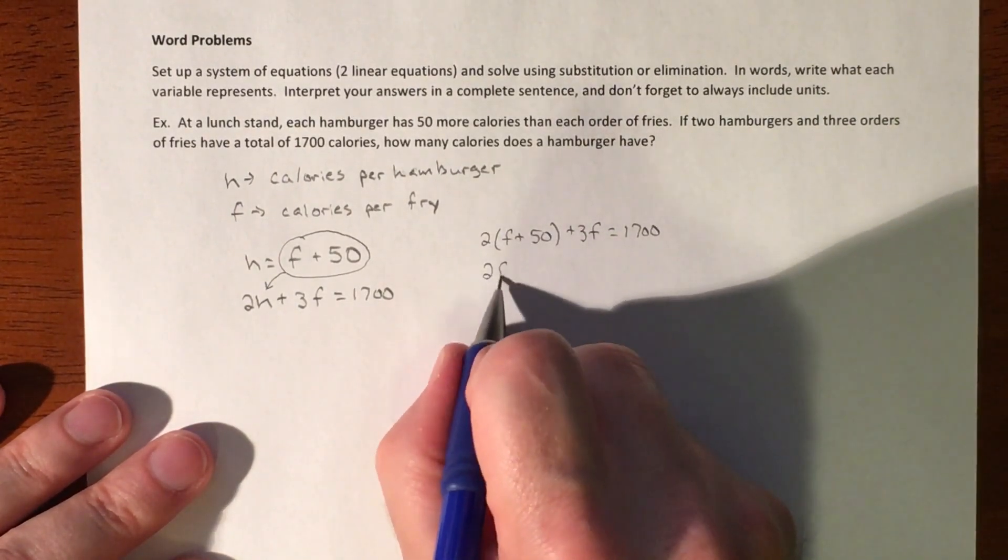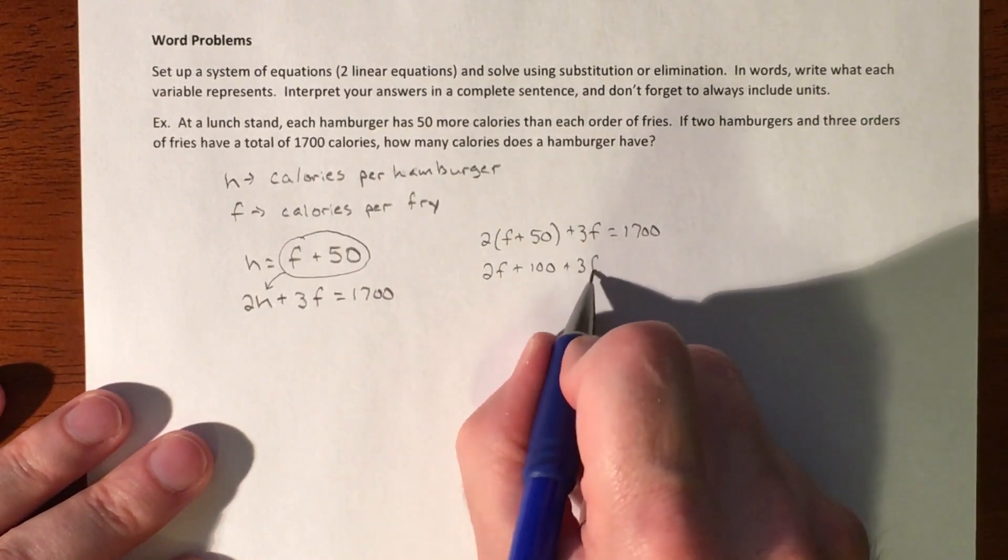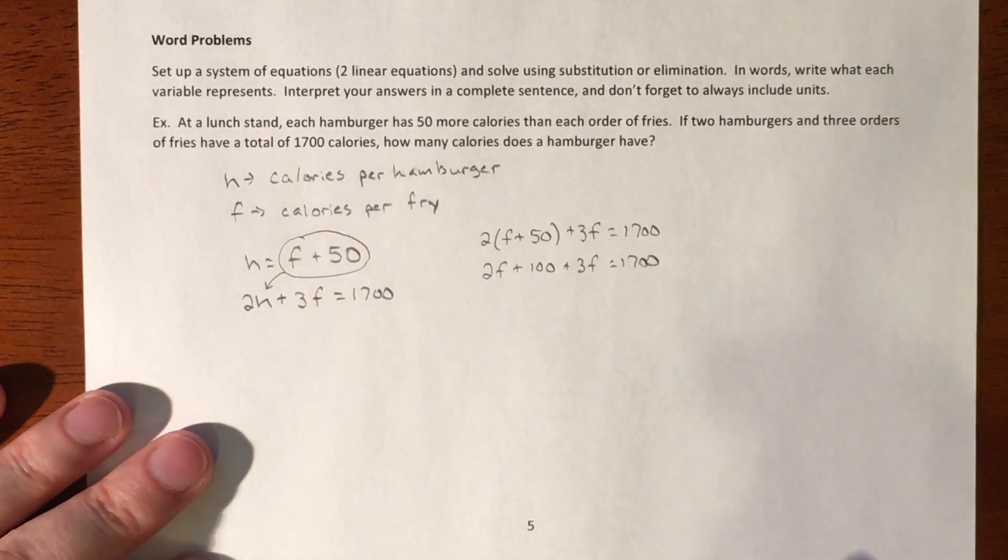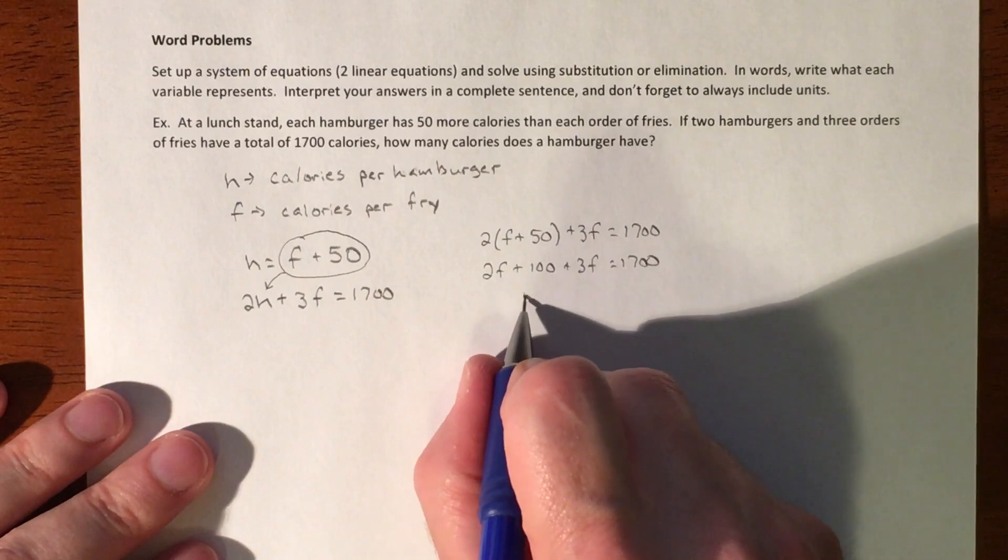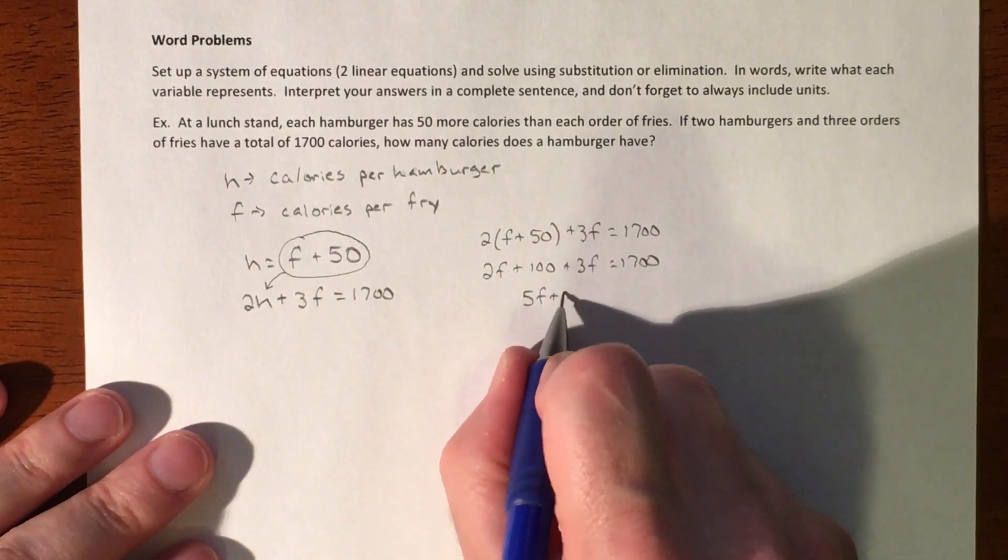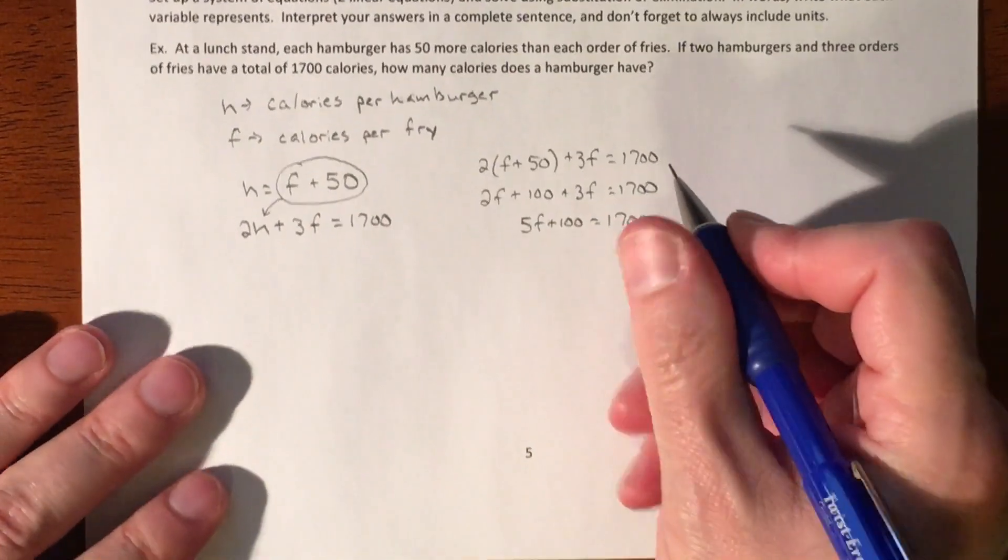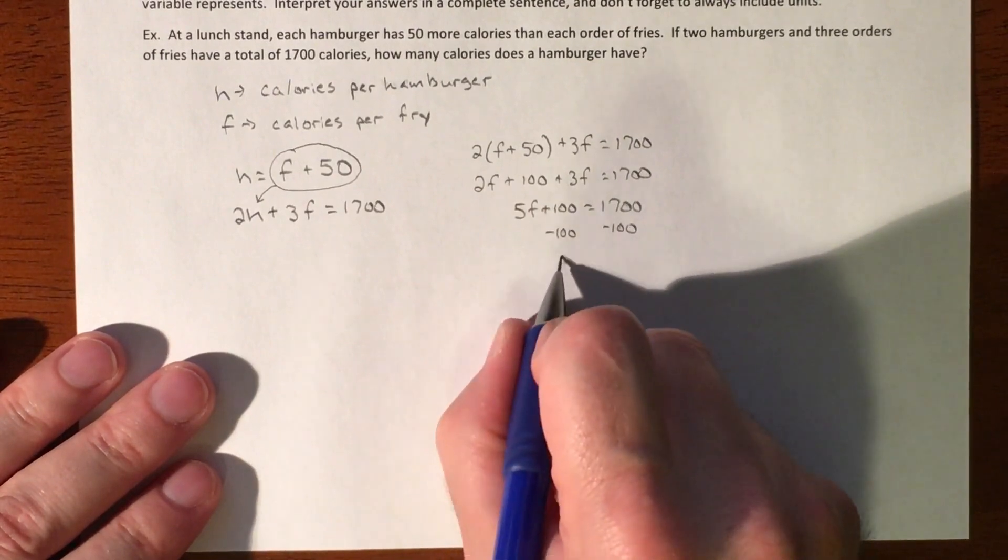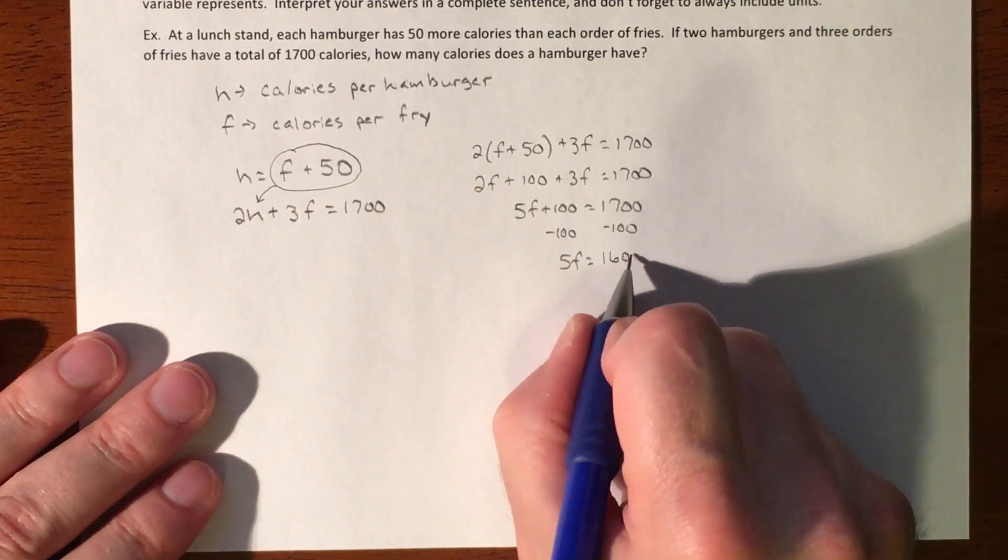We'll distribute: 2F plus 100 plus 3F equals 1,700. Then we'll subtract 100. 5F equals 1,600.